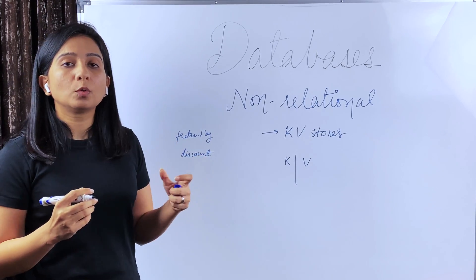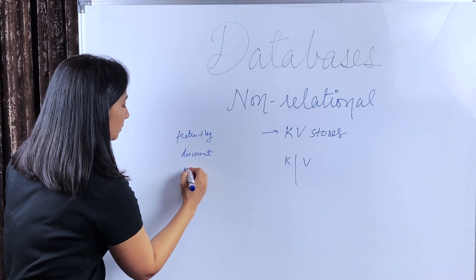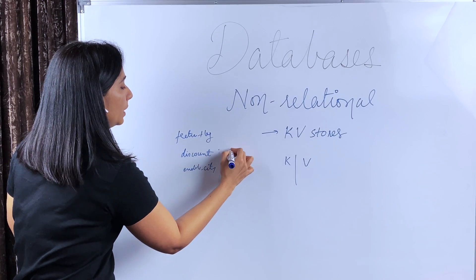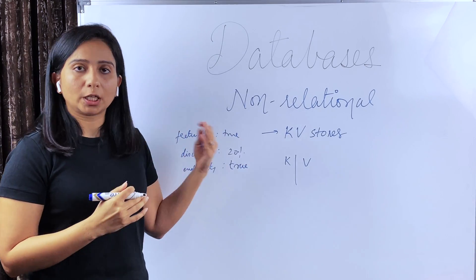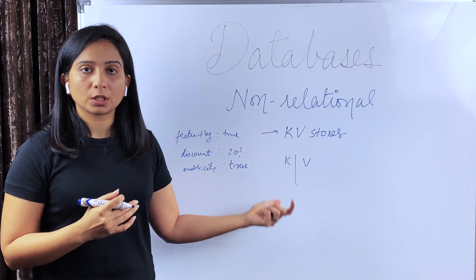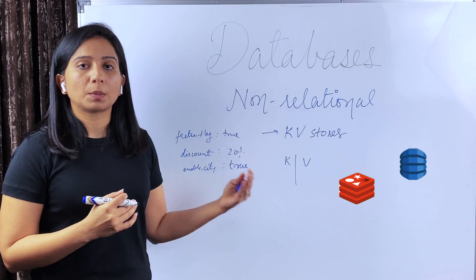So suppose you have requirements like you have a feature flag or you have certain discount or promotion or you want to enable certain features in a certain city for your application. So these kinds of values could be stored in key value stores. There are multiple other cases for key value stores like caching solutions are implemented using key value stores. Some examples are Redis, DynamoDB, Memcache, etc.